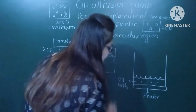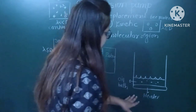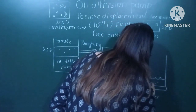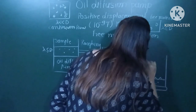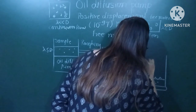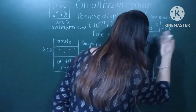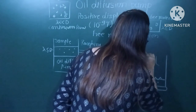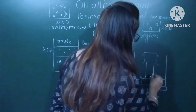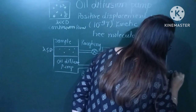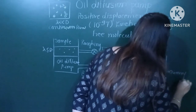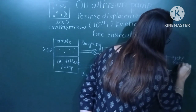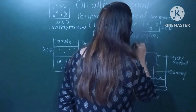This is a kinetic type of pump, so we must supply some energy. In the oil bath we have a chimney. The chimneys can be one stage, two stage, or three stage. At the top of the chimney we have a nozzle — this is the chimney and this is the jet or nozzle.